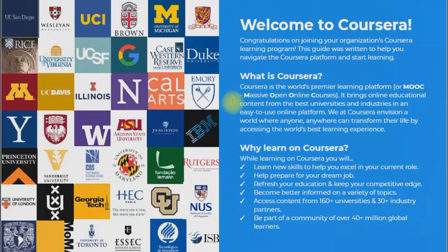In Coursera, the courses are mostly paid — either you have to pay for them, or you need financial aid. If you are registered as a free user, then after the completion of the course, you will not receive a digital certificate. You will either pay for it or apply for financial aid.